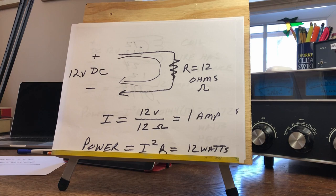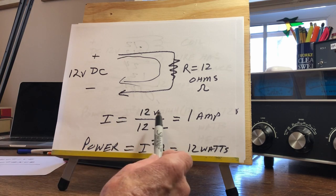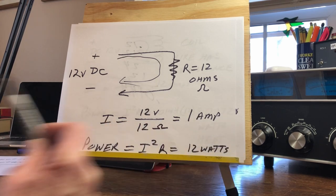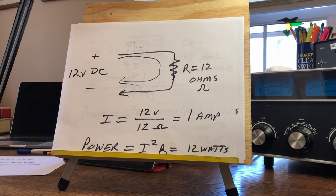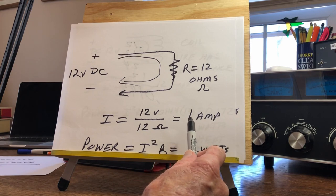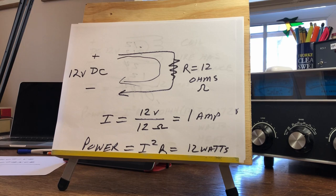I tend to use impedance and resistance interchangeably — they're almost the same thing, both measured in ohms. With a resistor we have pure resistance. Current flow will be 12 volts divided by 12 ohms, or 1 amp. The current flowing through the resistor creates heat. The power used is I²R — in this case 1 × 1 × 12 = 12 watts. We consume power in the resistor in a DC circuit.